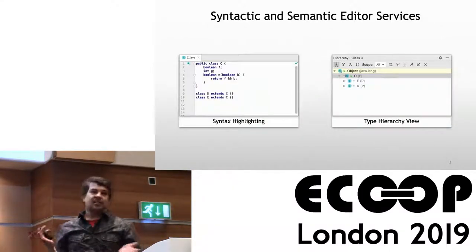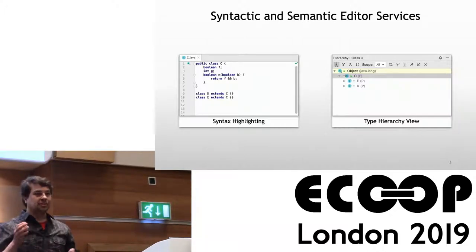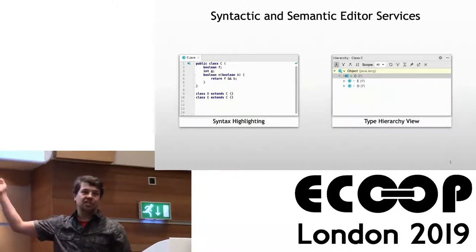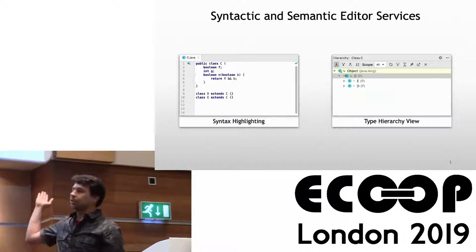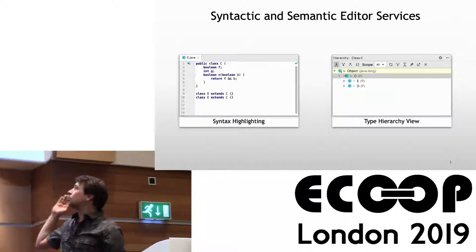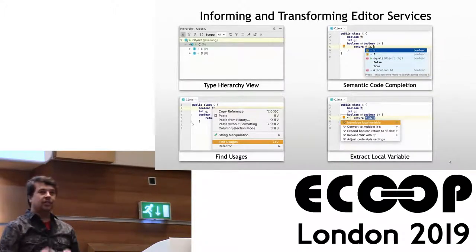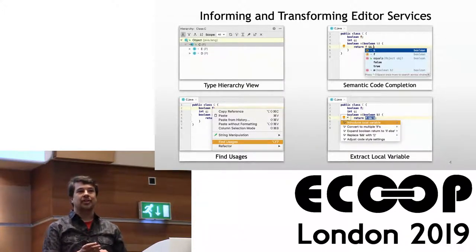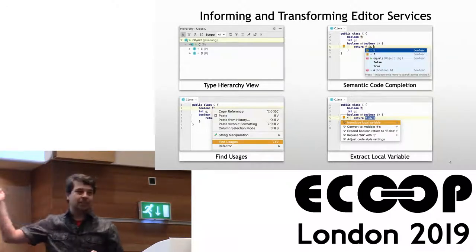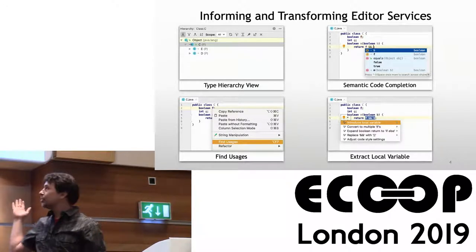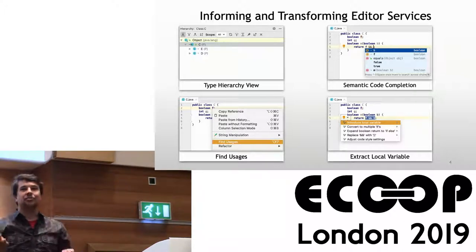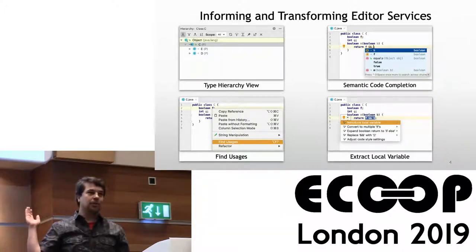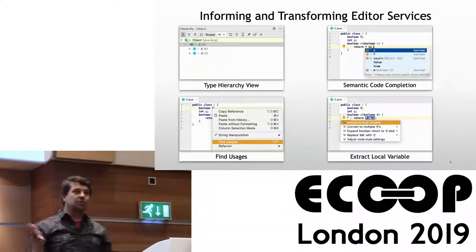What are editor services? We can describe editor services as either syntactic editor services such as syntax highlighting, or semantic editor services such as an editor service that displays the type hierarchy. We can further divide them into informing editor services and transforming editor services. The transforming ones are the most interesting — they actually modify the program, for example code completion or extracting a local variable as a refactoring.